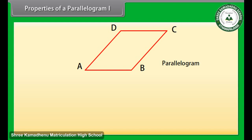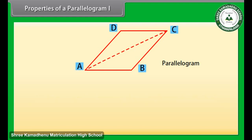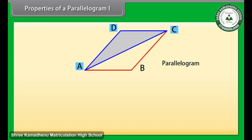Properties of a parallelogram. Property one says that a diagonal of a parallelogram divides it into two congruent triangles. Let us prove this theorem. Let ABCD be a parallelogram and AC be a diagonal. We can see that diagonal AC divides parallelogram ABCD into two triangles: triangle ABC and triangle CDA.